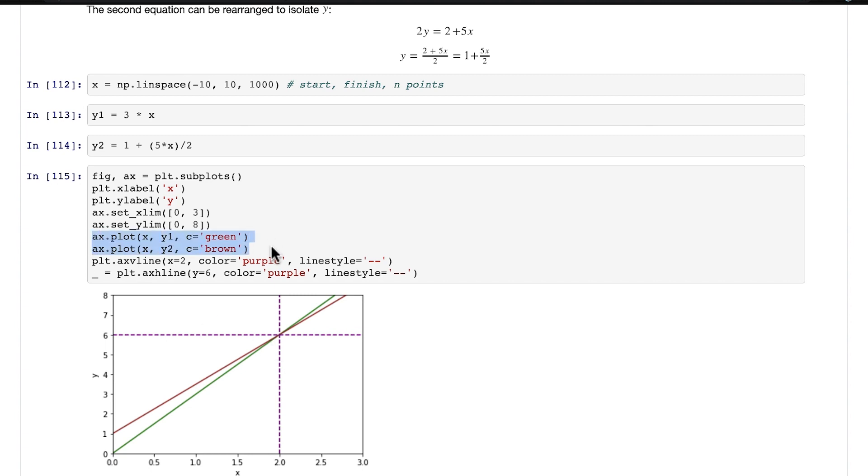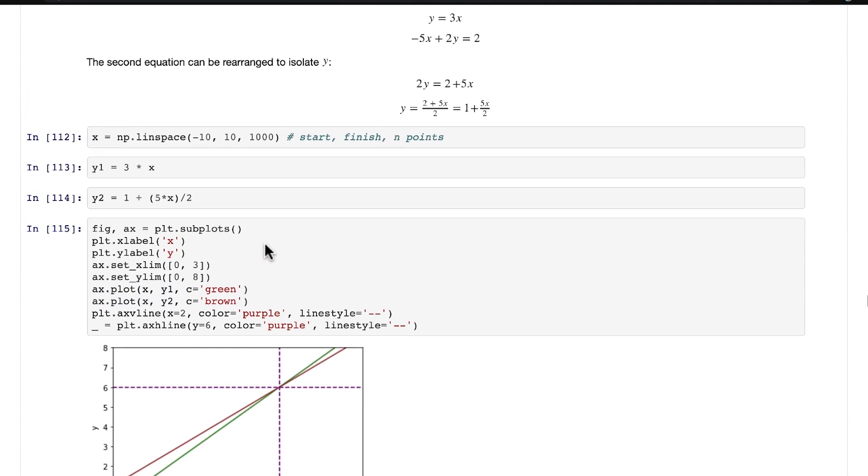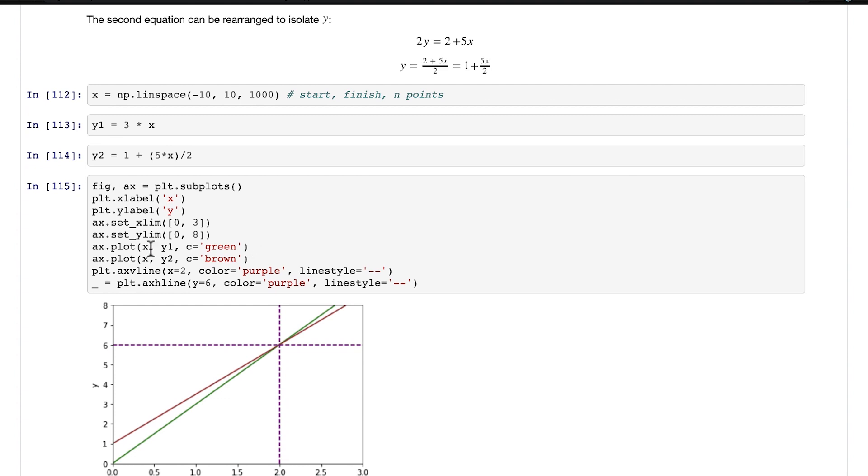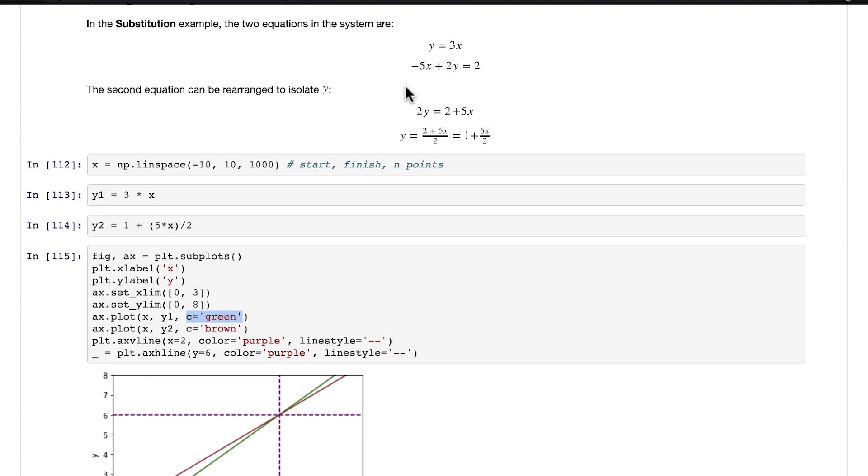Just like the bank robber and sheriff example, I'm plotting one line in green and one in brown arbitrarily. There's no reason why I would pick green for one and brown for the other. But y1 is a function of x, so green is our first equation, y = 3x.